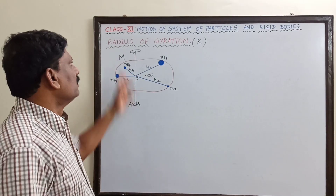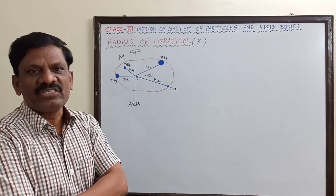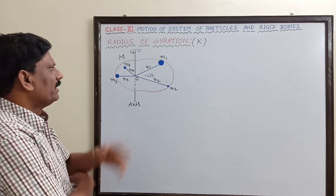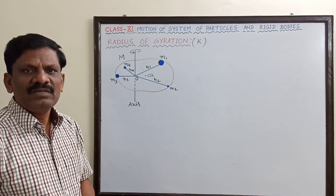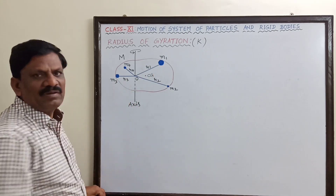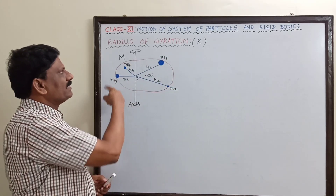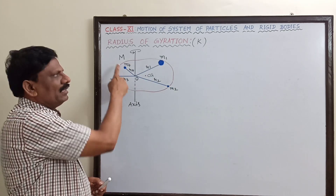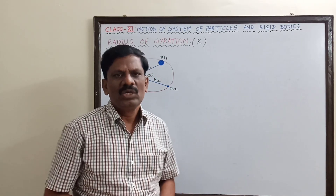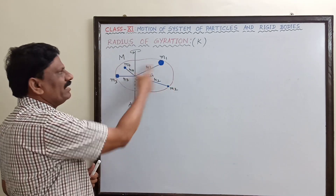Let us now understand what is the radius of gyration, which is represented by the symbol K. Let us assume this is a rigid body which has an irregular shape and non-uniform distribution of masses of the particles. The entire rigid body has a total mass capital M and it is assumed to be made up of individual point masses which have different masses.